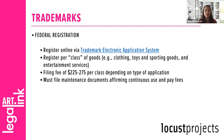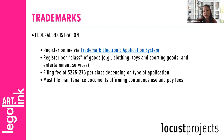To obtain federal registration, you can use the USPTO's trademark electronic application system. While you can apply yourself, I definitely recommend consulting with an attorney to make sure you file for protection in the correct classes or categories of trademark use. You register per class or category of goods, which include for example clothing, toys and sporting goods, and entertainment services. The filing fee is $225 to $275 depending on the type of application per class. The length of protection can be indefinite — unlike patents and copyright, trademark protection can last indefinitely, as long as the mark continues to be used in commerce and maintenance filings are made with the USPTO.